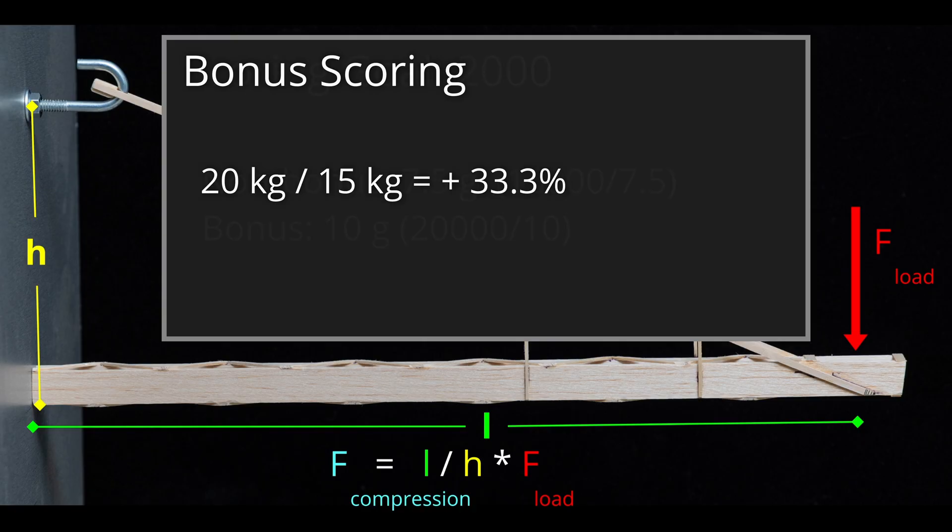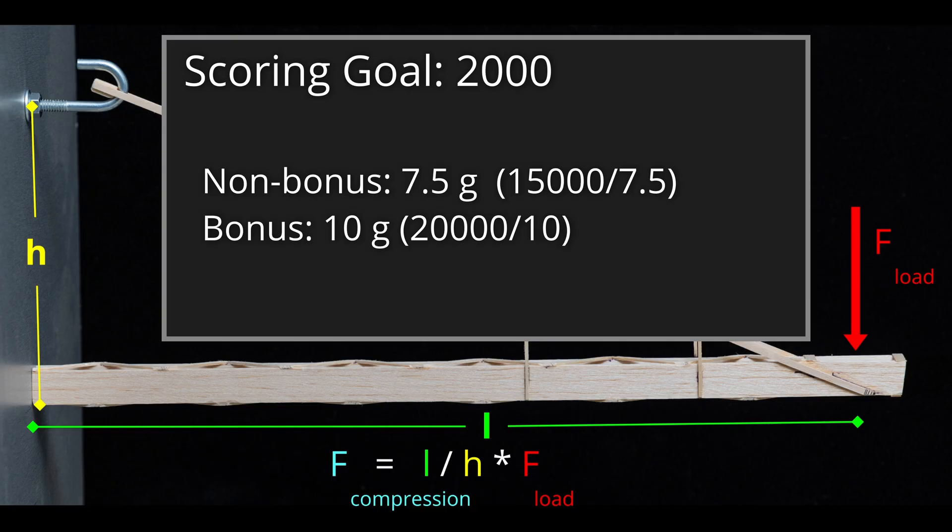To give a concrete example, say you wanted to have a competition score of 2000. You could either create a 7.5 gram non-bonus boomy that held 15 kg, or you could achieve the exact same score by having a 10 gram bonus boomy that held 15 kg. That means, at least on paper, both the non-bonus and bonus designs have very similar scoring potential and both are viable approaches.